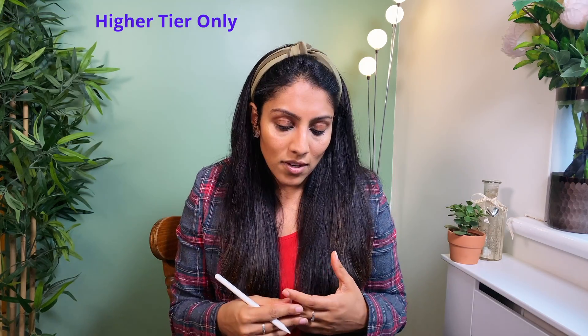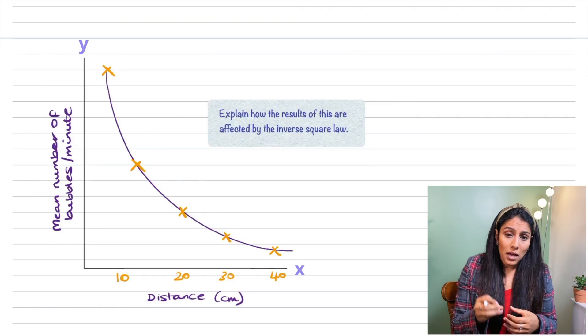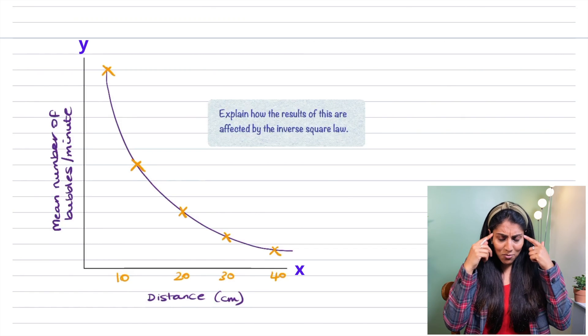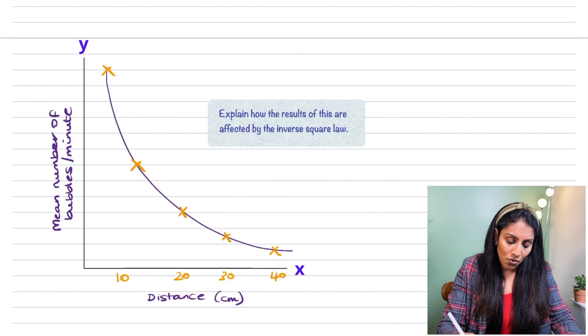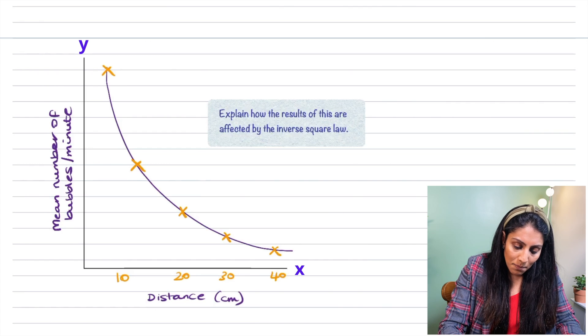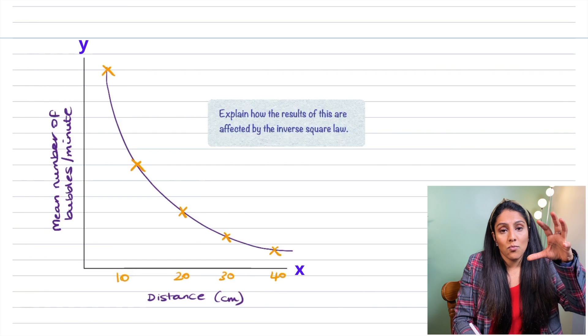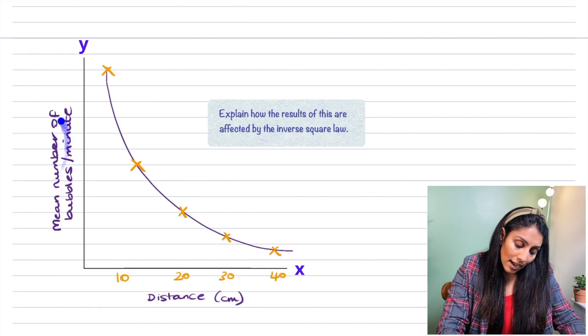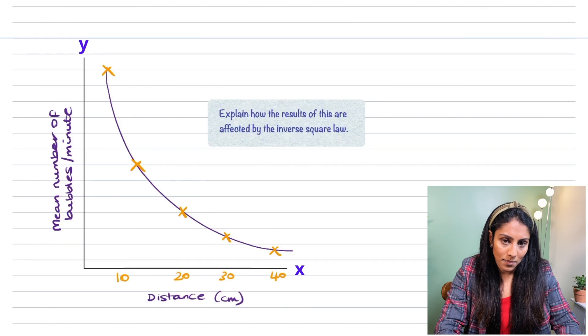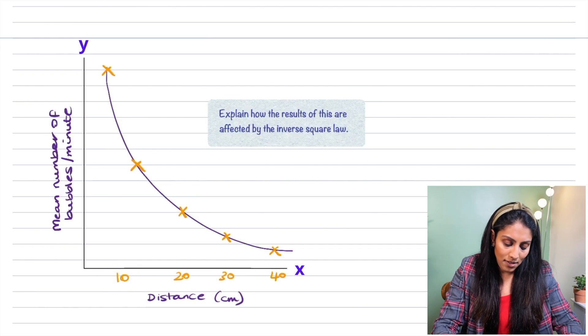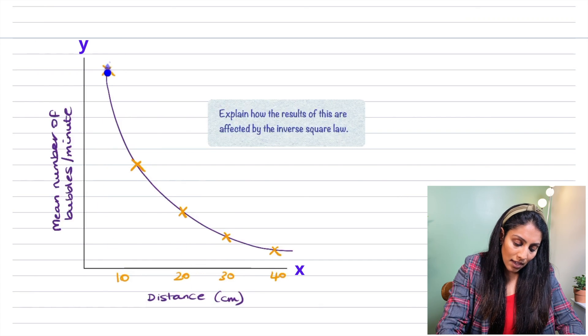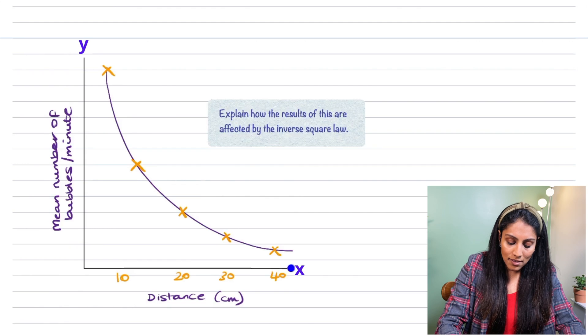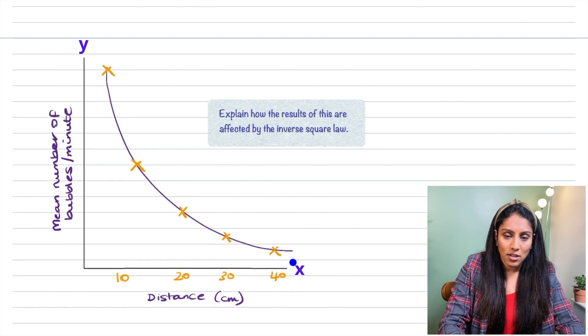Now if you are a higher tier student you may want to look at the following statement. In your spec point it will say explain how the results are affected by the inverse square law. That sounds really complicated but it really isn't. All it means is if you look at this graph when I double my distance, the rate of photosynthesis is going to decrease by four times and therefore the number of bubbles or the volume of bubbles on my y-axis is also going to decrease by four times. So if I give you an example, here is 10 centimetres and when I double 10 centimetres to 20 this area here is going to decrease by four times and in the same way if I have 20 centimetres and I double it to 40 the number of bubbles again is going to decrease by four times.